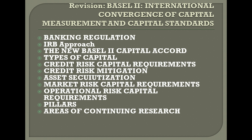When Basel started, we looked at the Cooke ratio, where capital divided by risk-weighted assets must exceed eight percent. We'll revisit the Tier 1, 2, and 3 capital and the weights given to them. Risk-weighted assets means we attach a risk weight to our assets. Earlier, only credit risk was used, and then we moved on to include market risk as well.